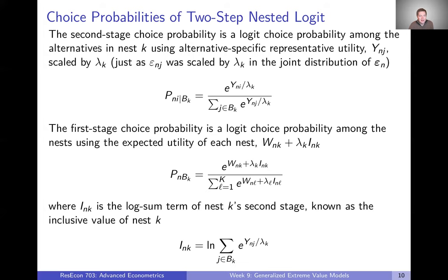The one tricky thing is that we scale our Y's by λk. If you recall the joint cumulative density distribution from the first video, our epsilons were scaled by λk, so we scale our Y terms by λk here as well. Once we've calculated our alternative-specific representative utility and scaled it by λk, we put that in the exponents and treat it as a logit problem within that nest. So the second step is essentially just a logit problem.